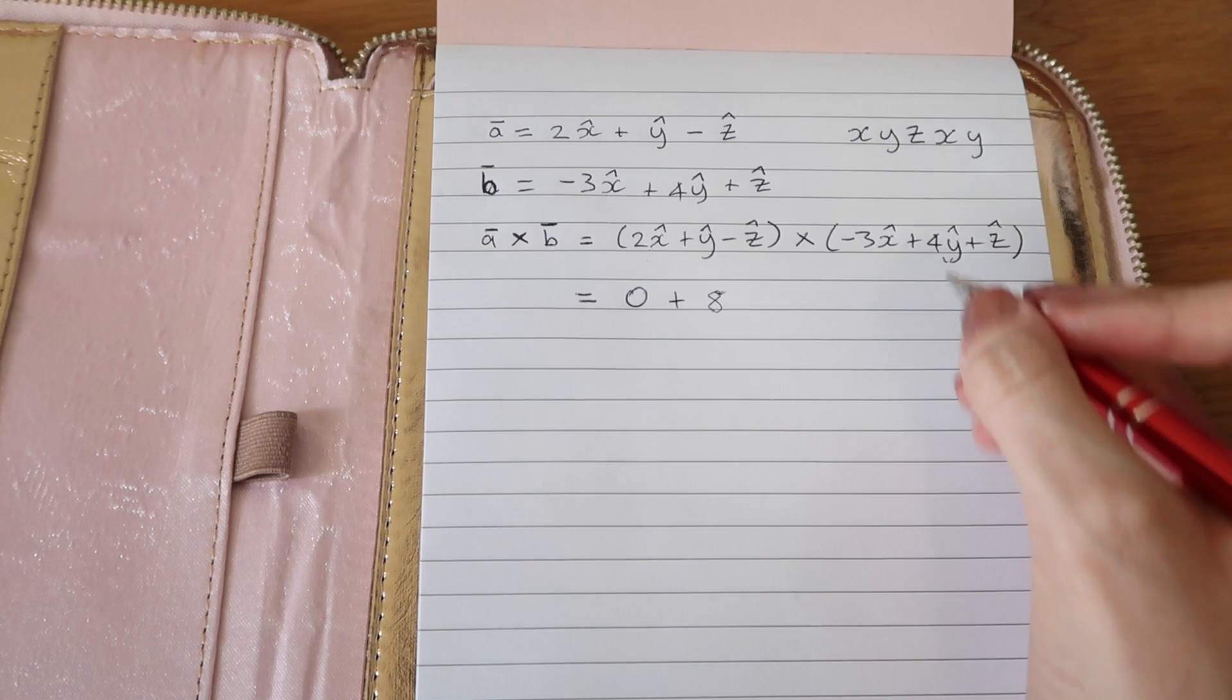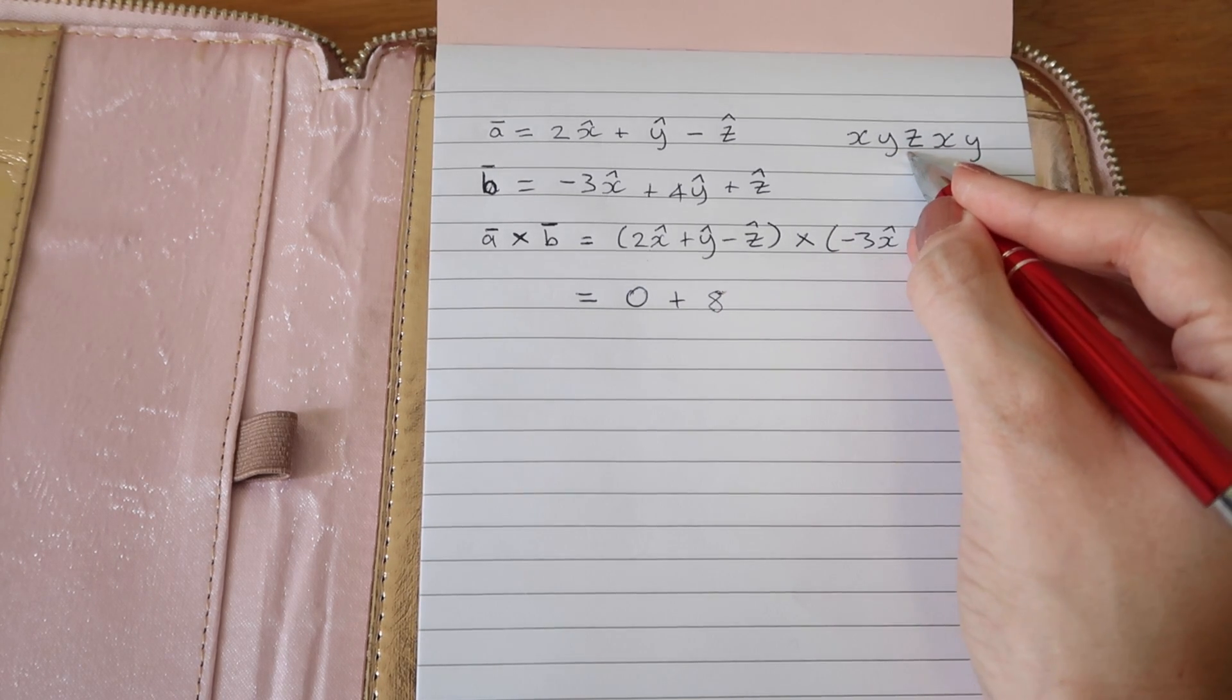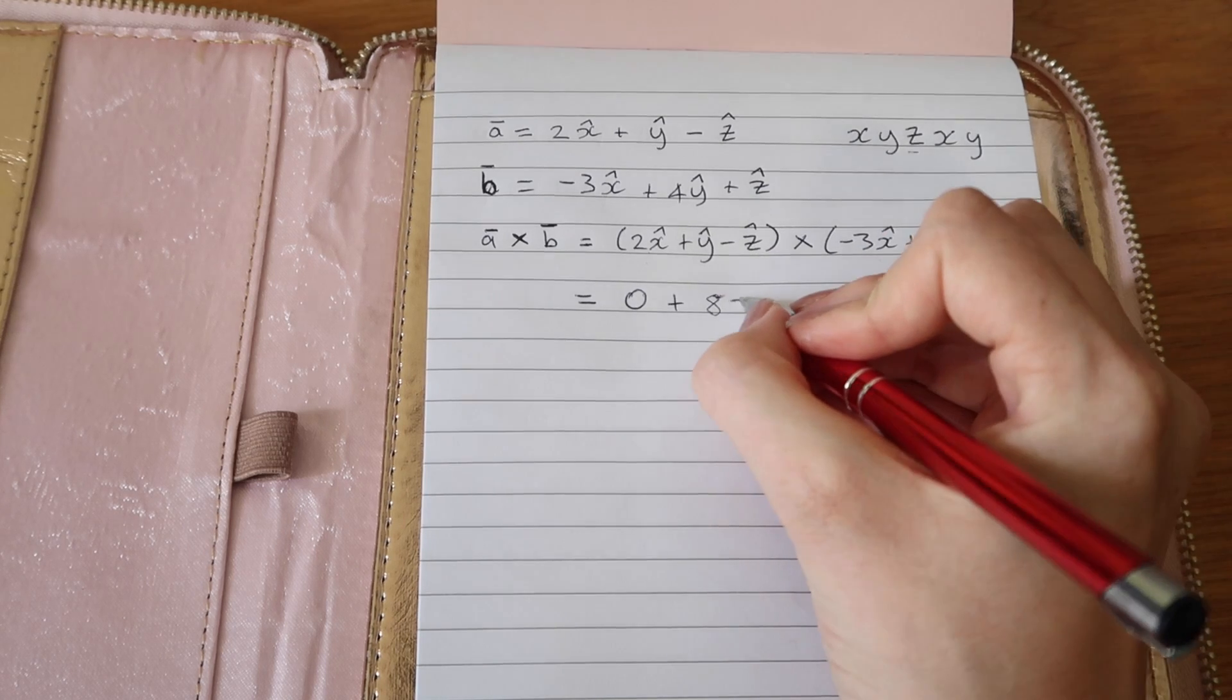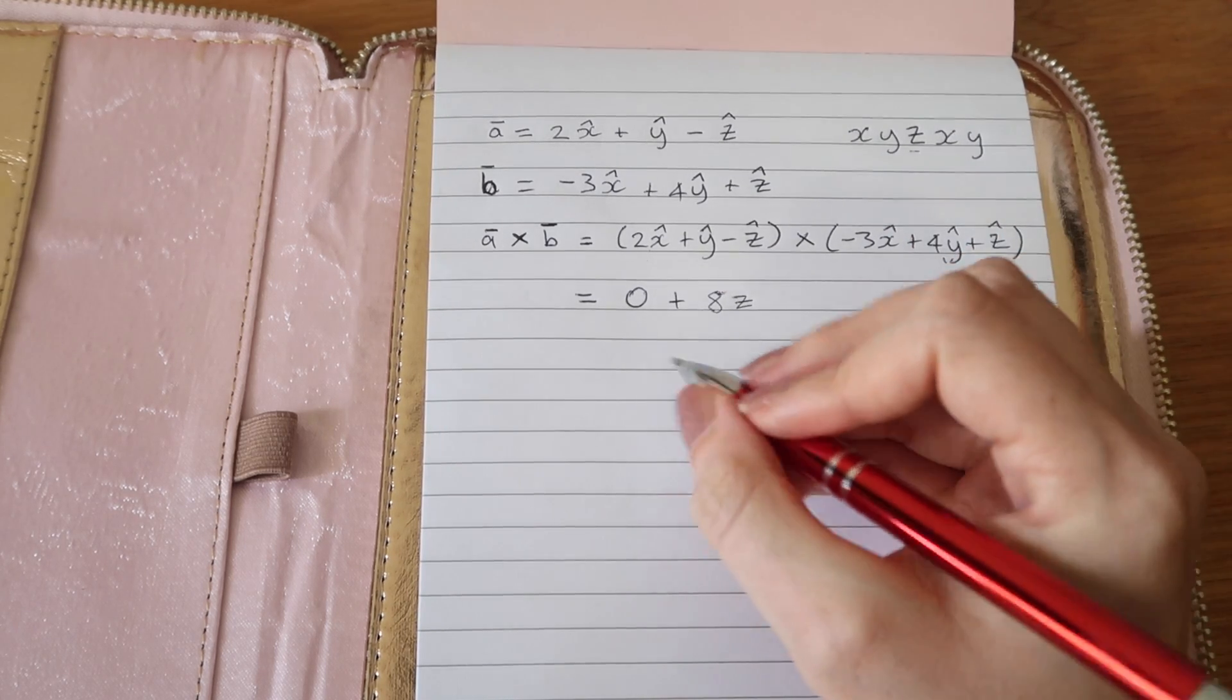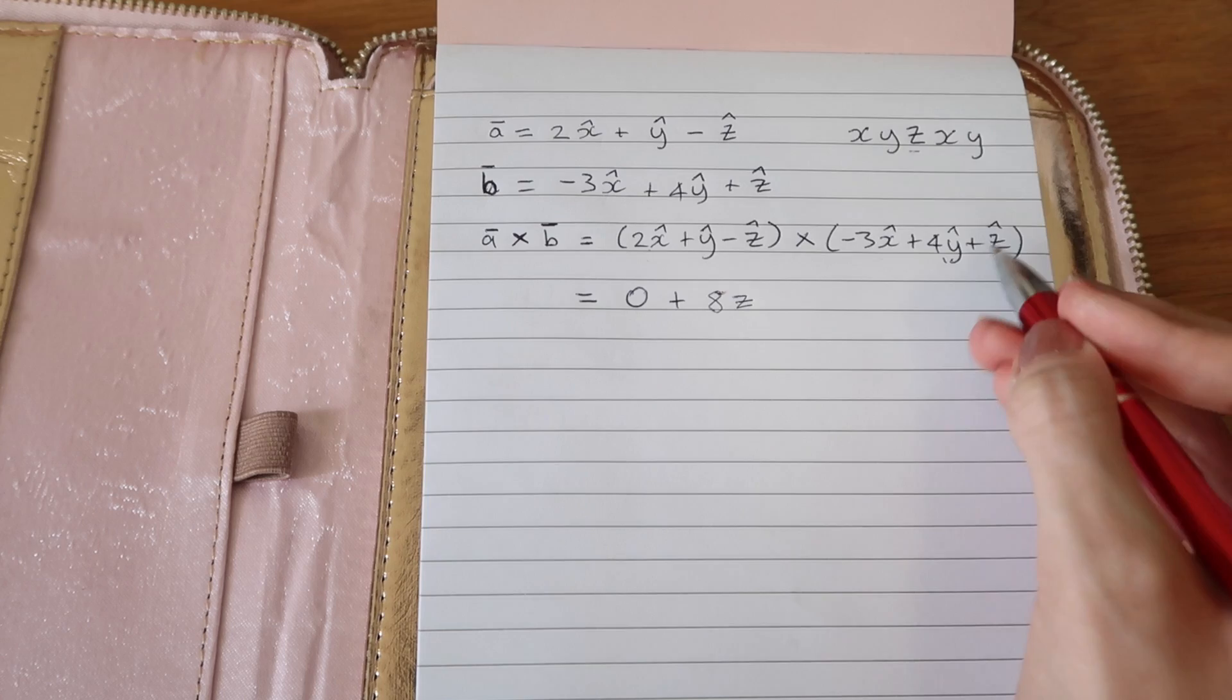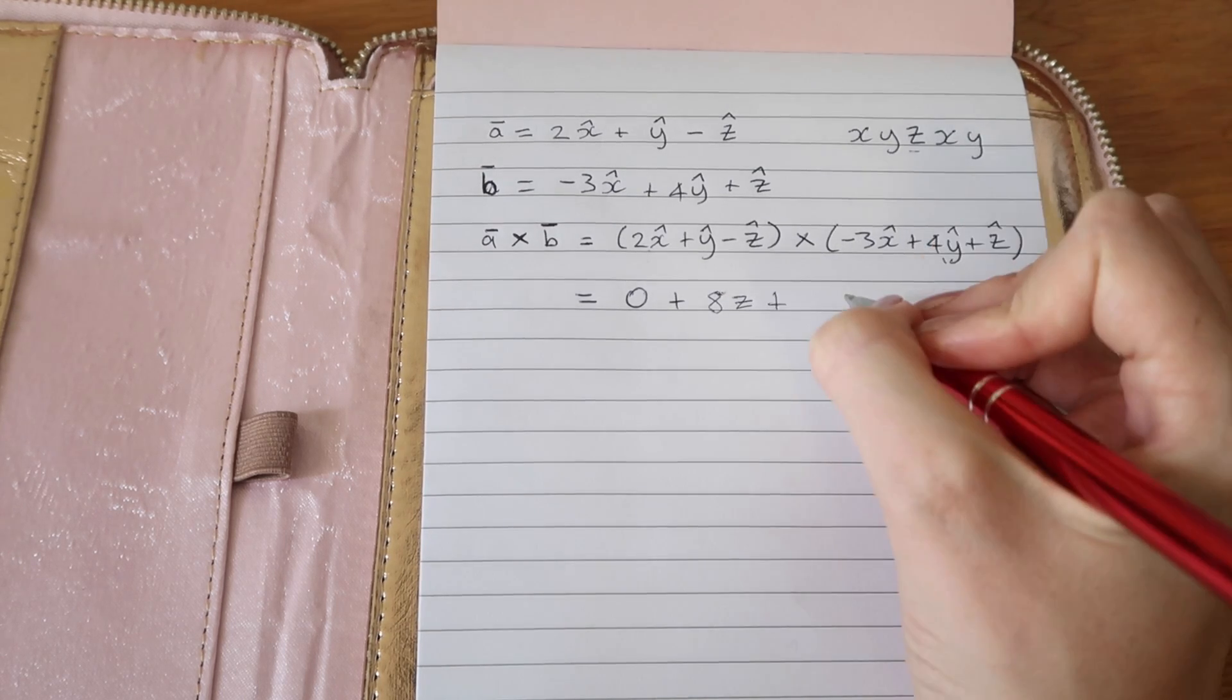If the directions I'm crossing appear in the sequence x, y, z, x, y, then I know the resulting component will be positive. Otherwise it will be negative.